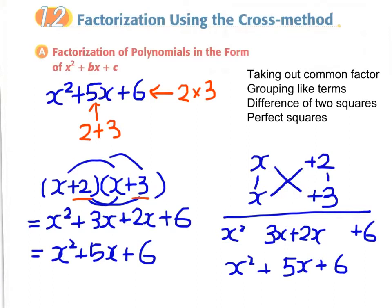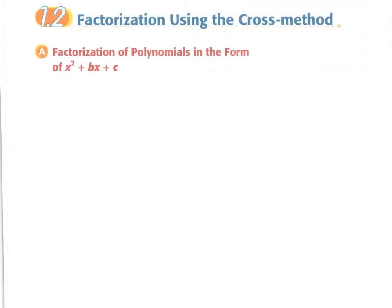Therefore, if we really have to factorize x squared plus 5x plus 6, all we need to do is write two factors in a vertical format and inspect the factors of the last term, 6. In this case, plus 2 times plus 3 gives us 6.